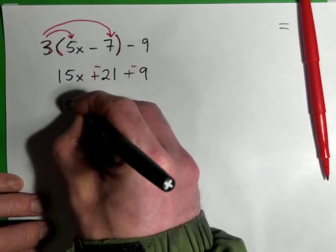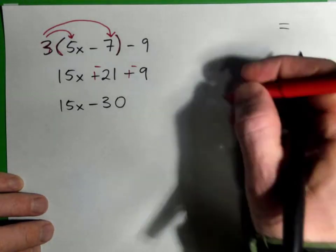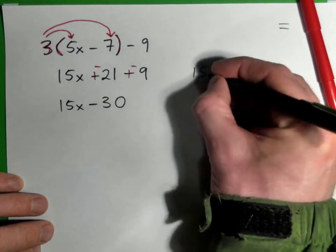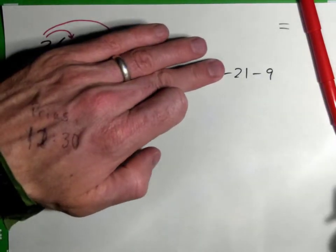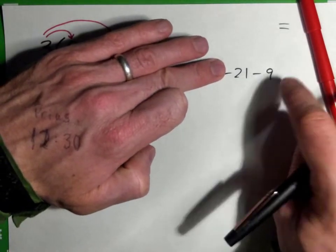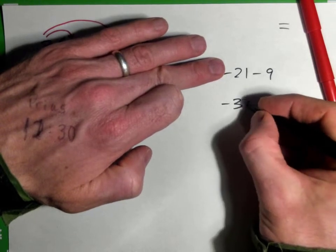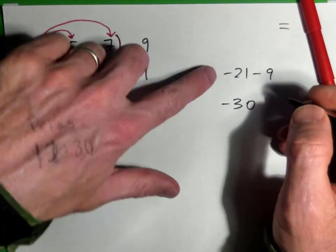So you have 15x minus 30. The other way to do it is you could think, hey I'm in debt by 20 dollars, I spend 9 dollars, now I'm in debt by 30 dollars. So you don't have to change them to negatives, you can just think of them as negatives or subtractions.